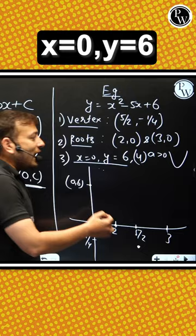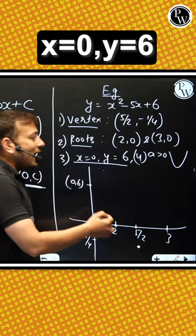x equals to 0, so y equals to 6 and a is greater than 0, so upward. So it will go like this. So this is the required quadratic equation.